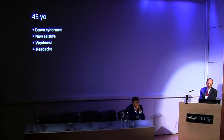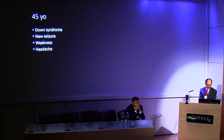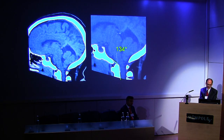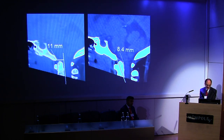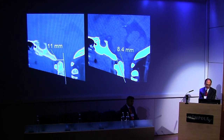This is a 45-year-old with Down syndrome who has developed new seizures, complaints of weakness, and new headaches. Although most people with Down syndrome at this age have developed some form of dementia, she doesn't seem to really have that — she was sent because of the seizure. She also has ventral brainstem impingement with a clival axial angle of 134 degrees, a Harris measurement of 11 millimeters, and 8.4 millimeters on Grab-Map Stone Oaks, which implies motion.